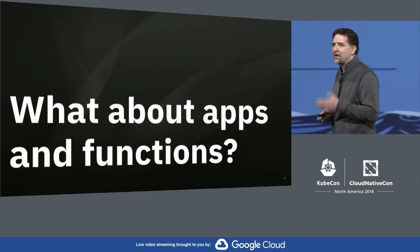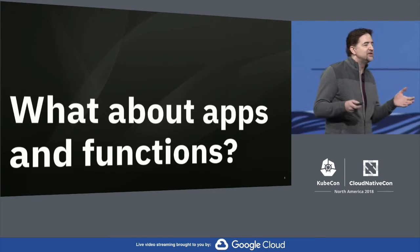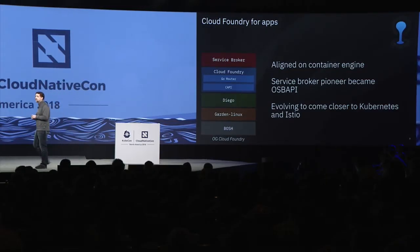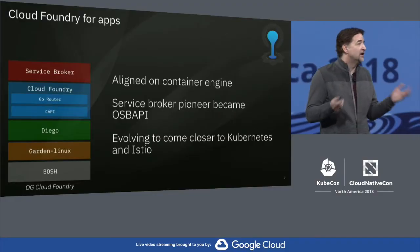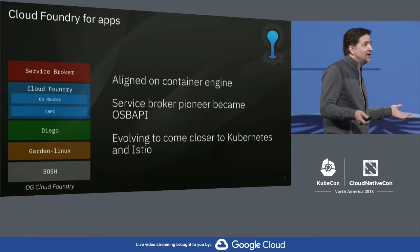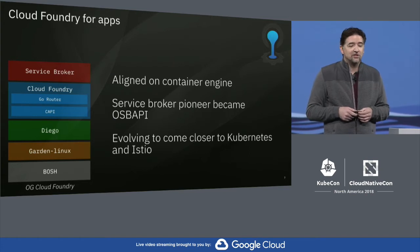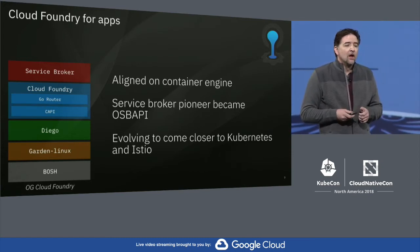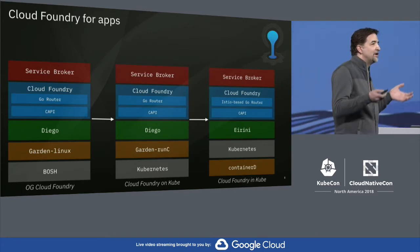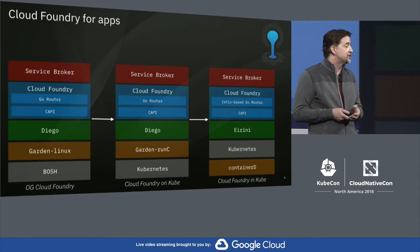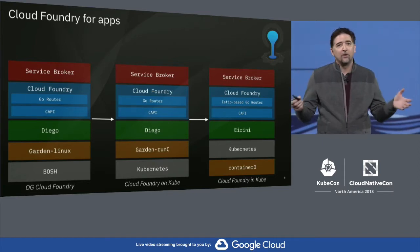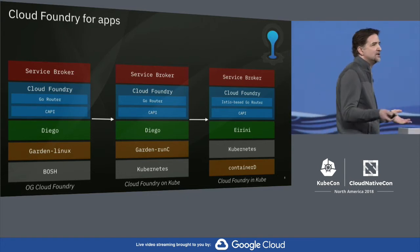So what's missing? What about apps and functions — how do we bring them into this common view of an application platform? For apps, one of the most prominent projects is Cloud Foundry. Cloud Foundry is already aligned around the container engine, pioneered the idea of service brokers, and is incorporating technologies like Istio and Envoy. With new projects like Irene, we're able to bring Cloud Foundry even closer to Kubernetes. What's still missing is alignment around how we do builds — how a developer can go from source code to a running system consistently across these different environments.